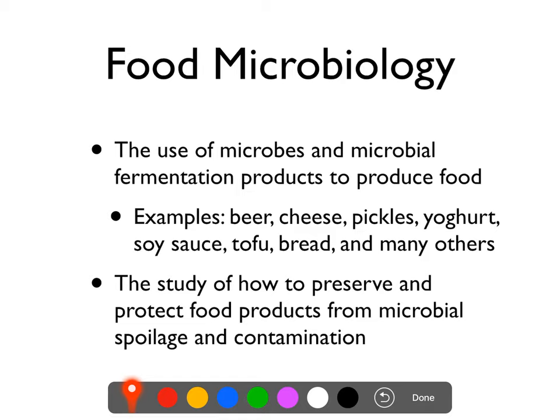Food microbiology basically comes down to using microbes to make food and learning how to protect food from microbes. We use microbes to produce fermented foods — some of the most common and ancient foods use microbes to make them: beer, cheese, pickles, yogurt, soy sauce, tofu, bread, vinegar, and lots of other things. All of those are made by microbes acting upon a food source, and fermentation is often used as a preservative. We also study food microbiology to protect ourselves from foodborne diseases and from spoilage.